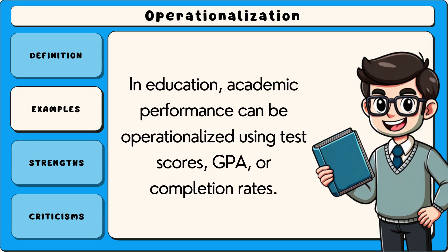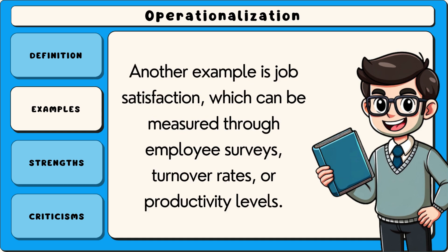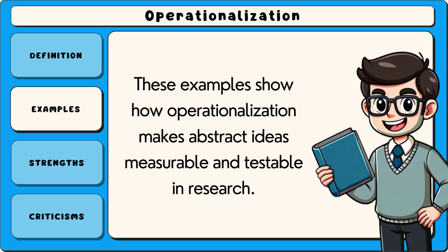In education, academic performance can be operationalised using test scores, GPA or completion rates. Another example is job satisfaction, which can be measured through employee surveys, turnover rates or productivity levels. These examples show how operationalisation makes abstract ideas measurable and testable in research.